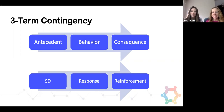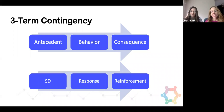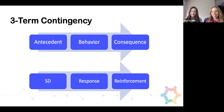But then we also hear terms like SD, response, and reinforcement. What does that really mean? We plotted the two out together, so you can see the A, or the antecedent, is kind of sort of like the SD. And what is SD? SD is discriminative stimulus. Your SD is usually your instruction.